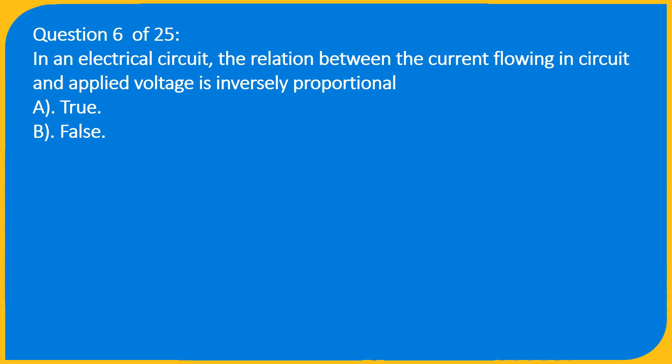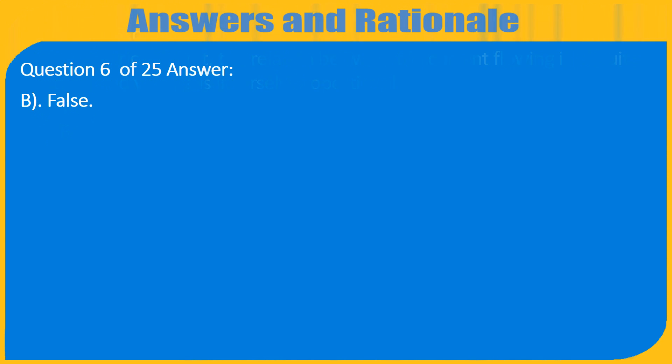Question 6 of 25: In an electrical circuit, the relation between the current flowing in circuit and applied voltage is inversely proportional — A. True, B. False. Answer: B. False.